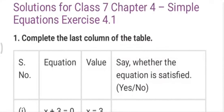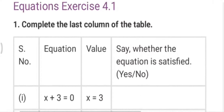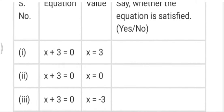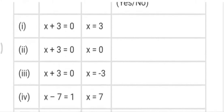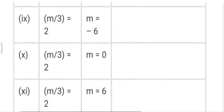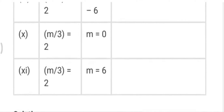This is Exercise 4.1, Chapter 4, Class 7th. We are doing question number 1. We have to complete this table. The equation is given and then we have to put the values x=3, x=0, x=-3 one by one. If the equation is satisfied then we will write yes, otherwise no. This table consists of 11 equations.